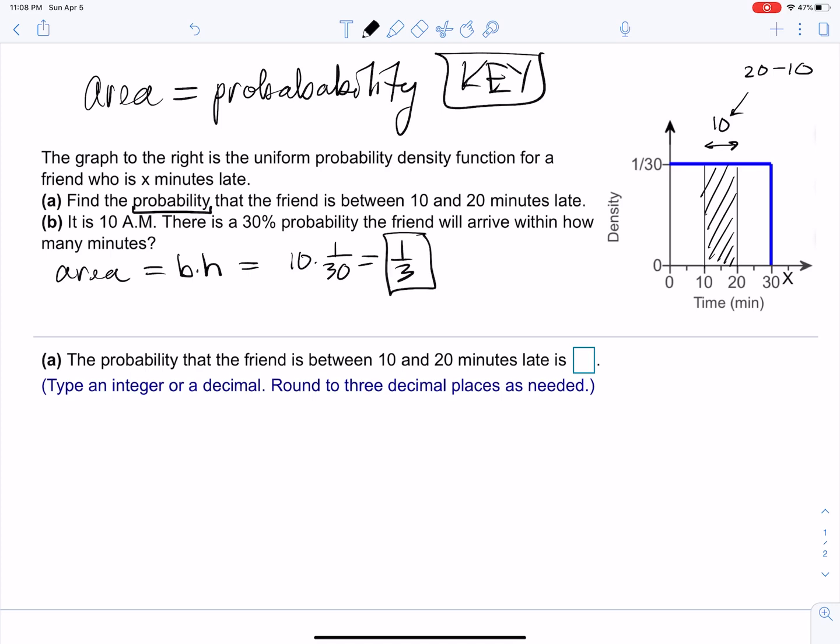So that's it. The probability that your friend arrives between 10 and 20 minutes late is 1/3. Now let's try part b.